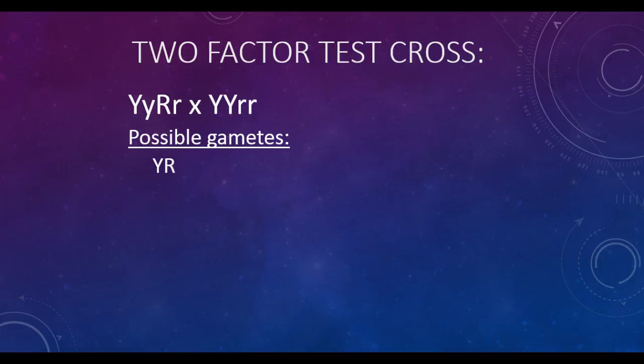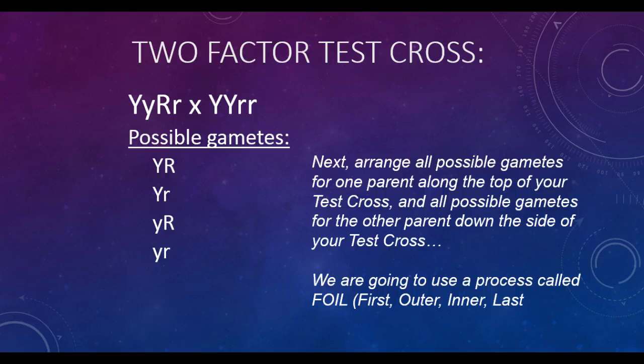We have big Y, big R; big Y, little r; little y, big R; little y, little r. We're going to arrange these gamete combinations atop of our test cross using a process called FOIL, which stands for first, outer, inner, last.